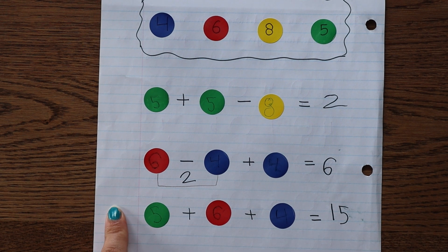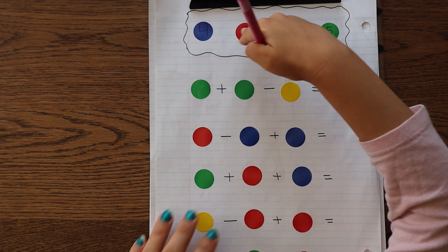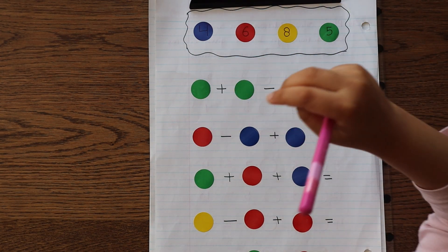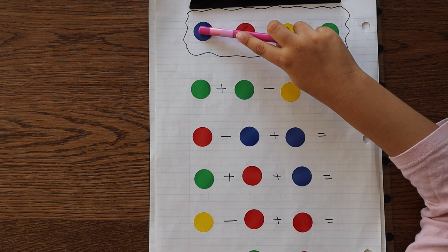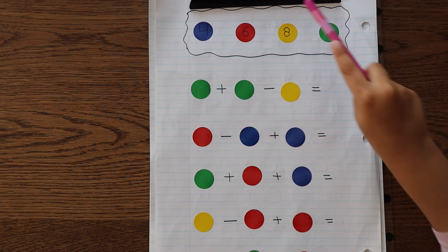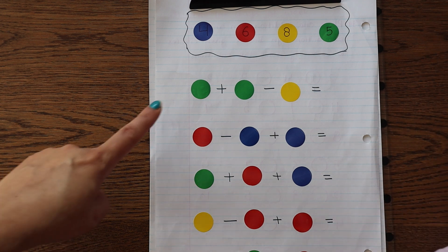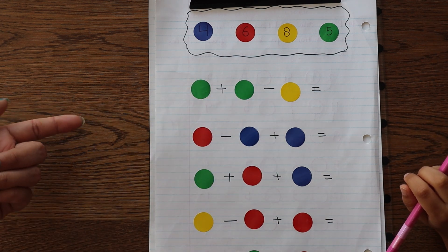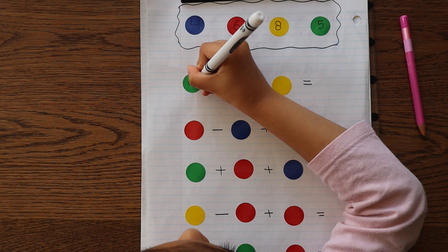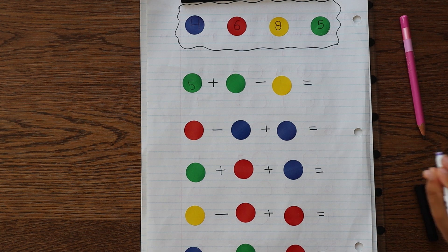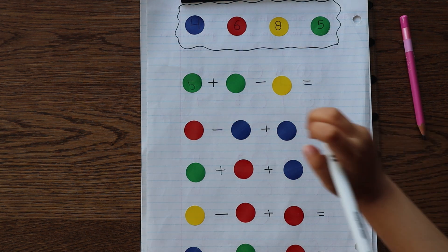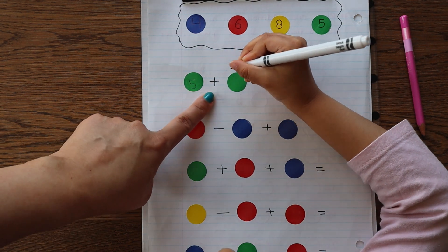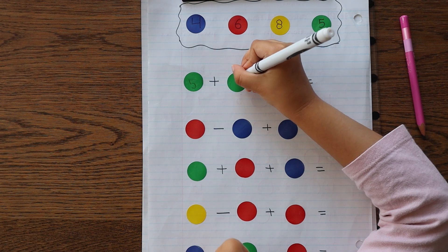After this we have one color coding activity which I'm going to show you in real time how Chia did this activity. You need to write, just use these four numbers to make numbers, to solve the equation. But it only needs to be these four numbers. So what you can do is you can either write numbers on these circles or if you want, you can write numbers below these circles.